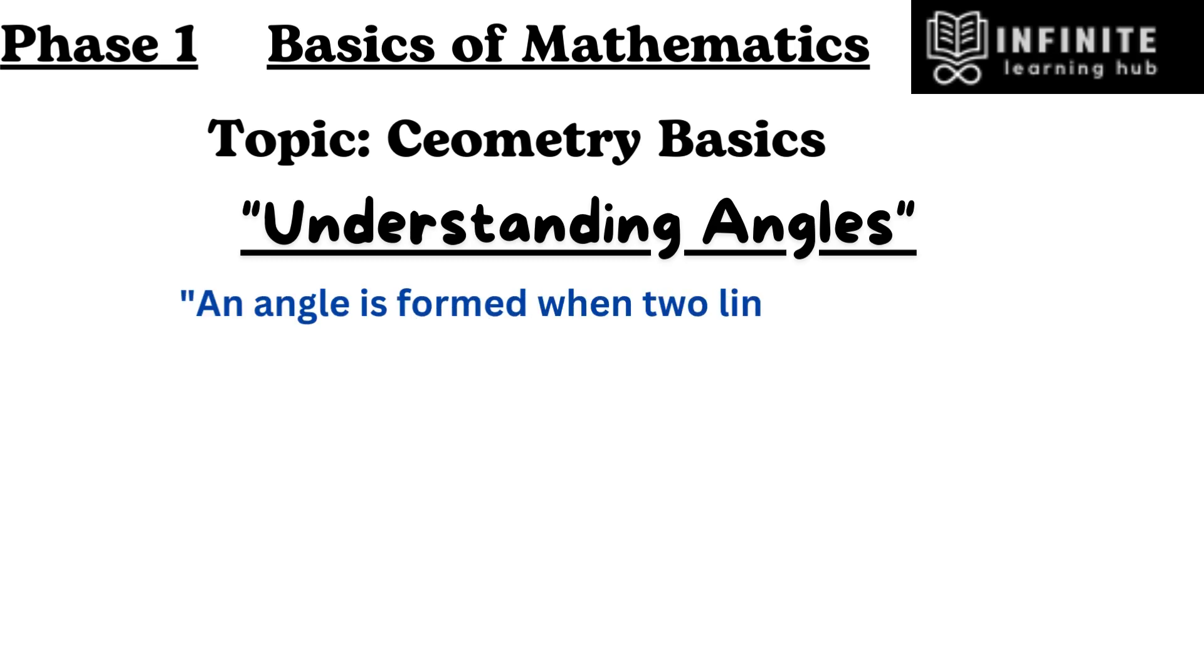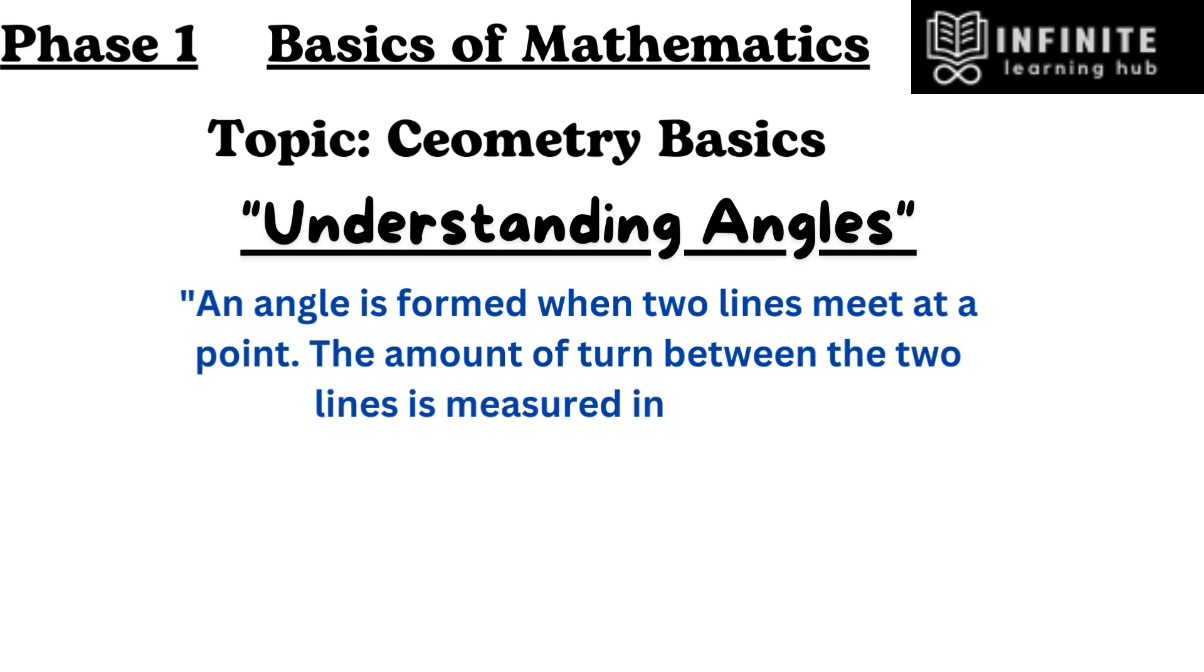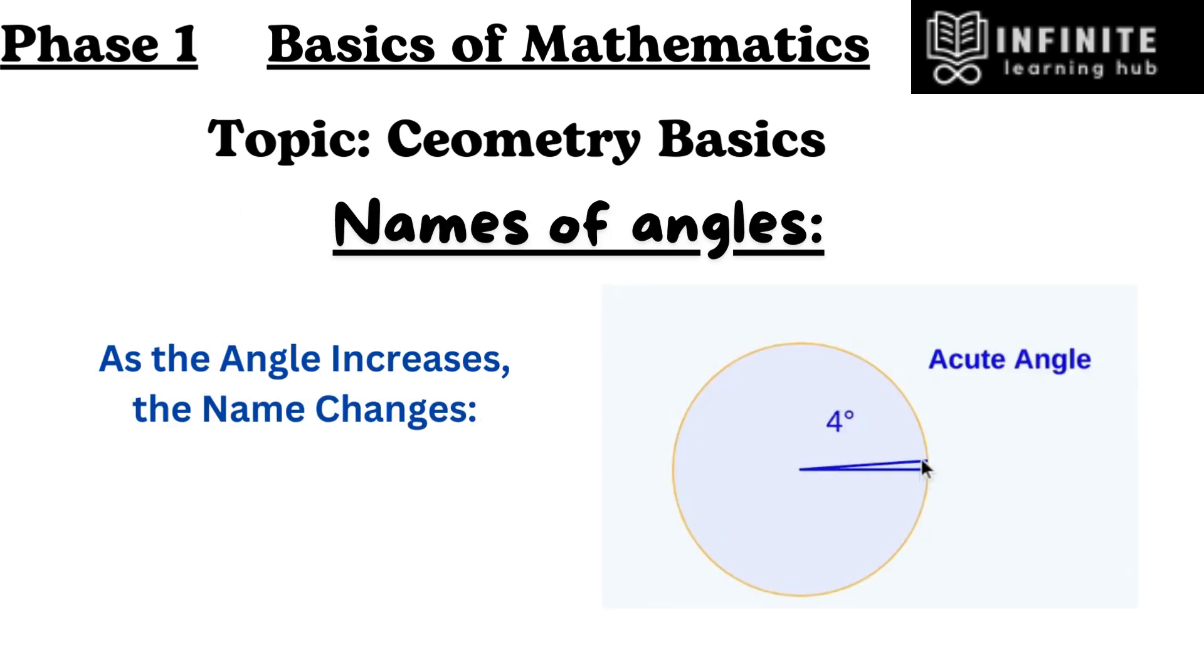An angle is formed when two lines meet at a point. The amount of turn between the two lines is measured in degrees. As the angle increases, the name changes.